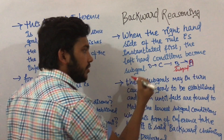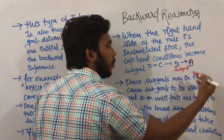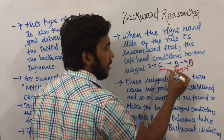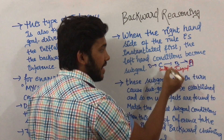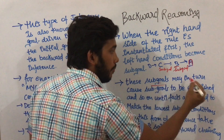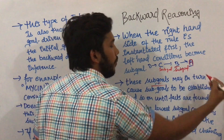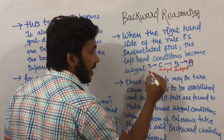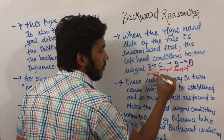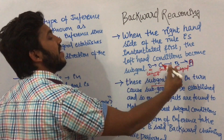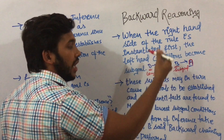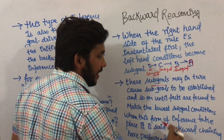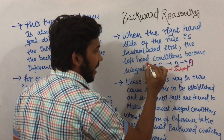These sub-goals may in turn cause further sub-goals to be established. B is a sub-goal, but B can establish more sub-goals — here C is also a sub-goal. For C, B is the right hand side and C is the left hand side. This continues until facts are found to match the lowest sub-goal condition. Here D is the lowest sub-goal, and backward reasoning stops when we reach the lowest sub-goal that is matched to the condition.